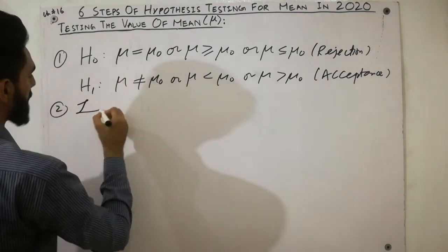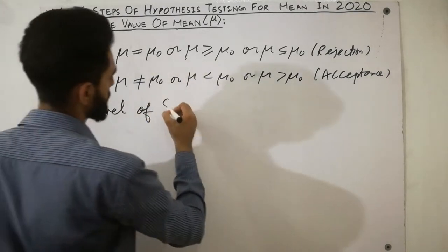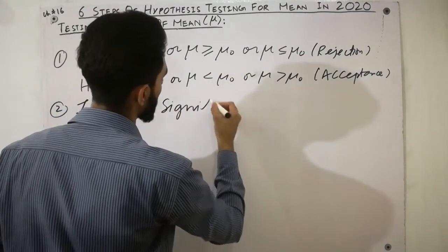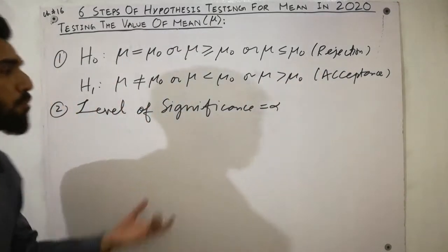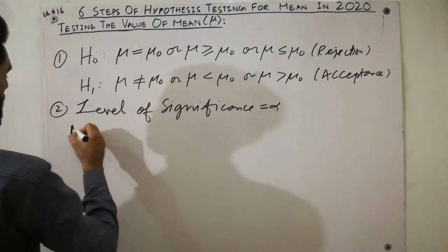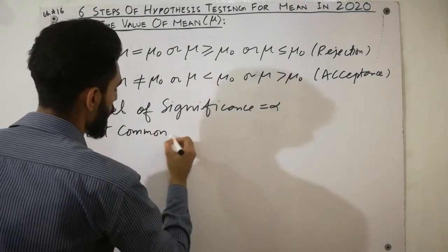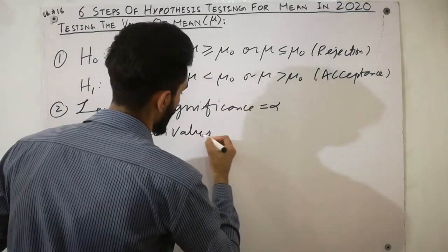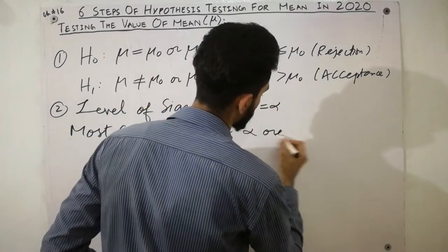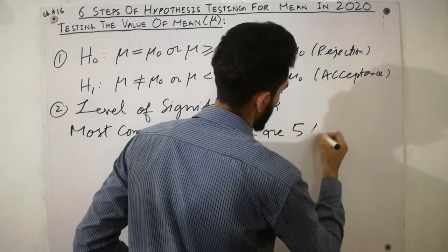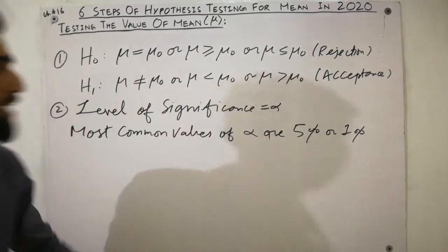Step two is the level of significance, which is alpha. The most common values of alpha are five percent or one percent — that is, alpha equals 0.05 or alpha equals 0.01.